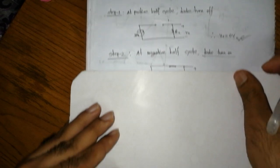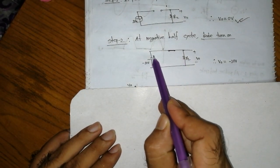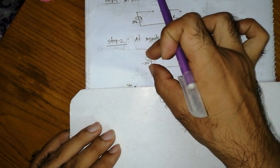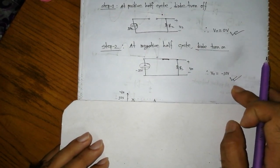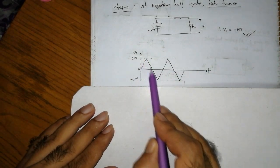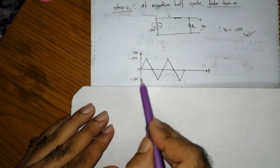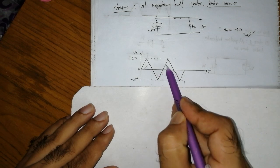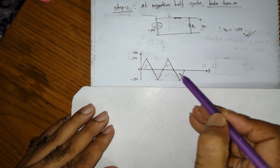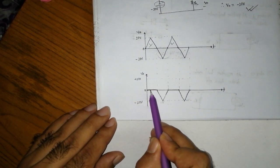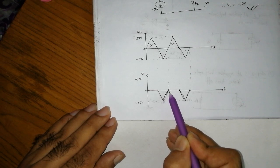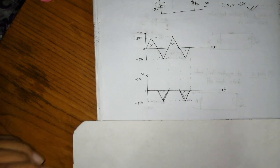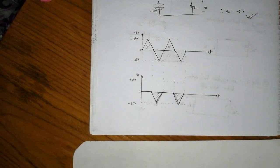When the diode is forward biased, it enters a short-circuit condition. For the positive half cycle the output is zero; for the negative half cycle the output equals the negative peak value. The input waveform is thus clipped on the positive side.